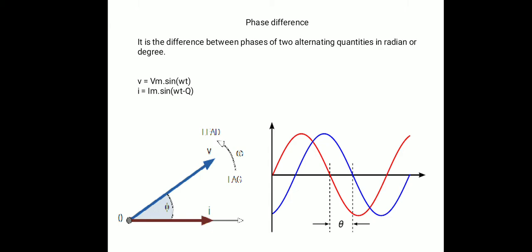If the red phase is the voltage phase, its instantaneous equation is v = Vm sin(ωt). If the blue phase is the current phase, then the instantaneous equation is i = Im sin(ωt − θ), because the current lags the voltage by an angle of theta degrees. Voltage is ahead, current is behind — so current is lagging voltage by theta degrees.